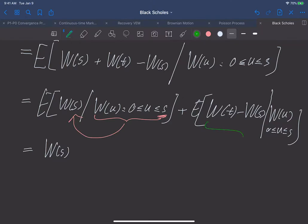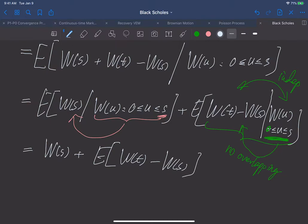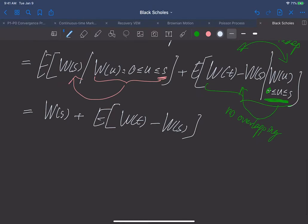Now if we look at the second one, from 0 to s and s to t, there is no overlapping except at s, but that doesn't matter in continuous time. They have no overlap, which means they are independent. Here we use independent increment of Brownian motion. As a result, the second one is as if we're taking this expectation without any condition, but this is zero. So this equals W(s). We just verified Brownian motion is a martingale.